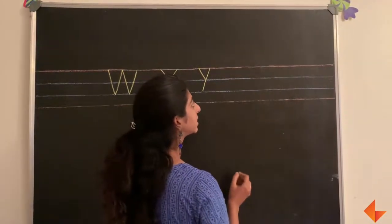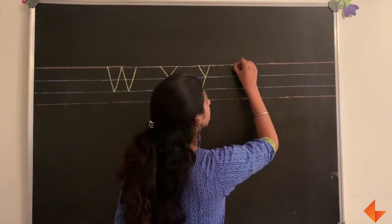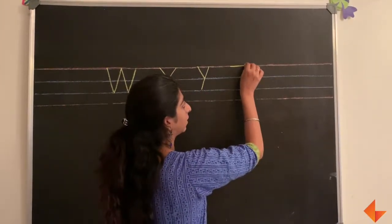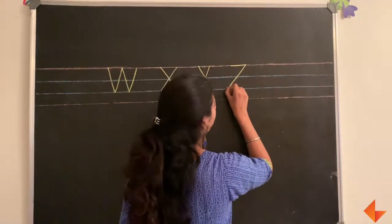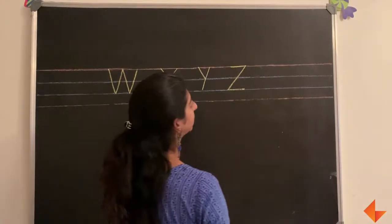To write the letter Z, draw a sleeping line, draw a big slanting line and another sleeping line.